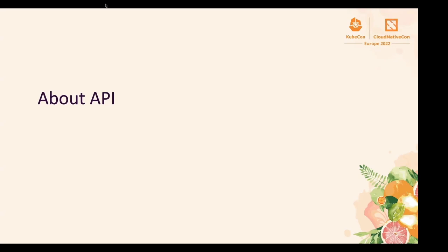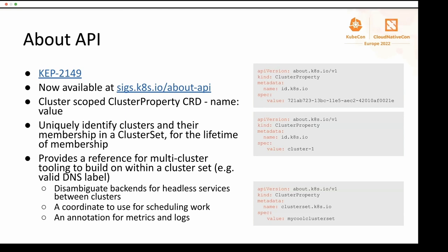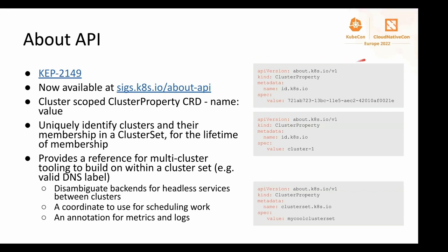The About API's full design is in KEP 2149 and it's now available at sigs.kates.io/about-api. It's a cluster-scoped ClusterProperty CRD with just a name and value, used for uniquely identifying clusters and their membership in a ClusterSet. The two special names are id.kates.io — to represent the name of the cluster — and clusterset.kates.io — to represent the ClusterSet membership of the cluster.